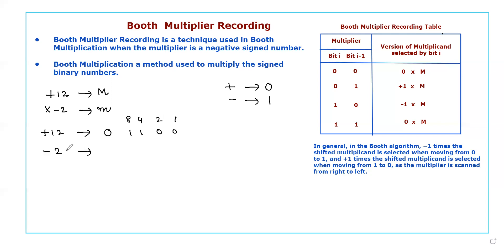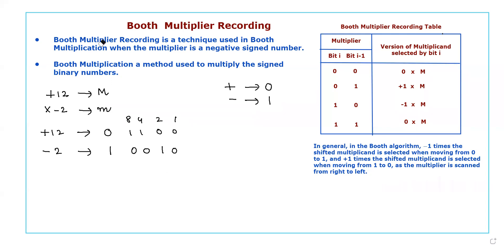Similarly, for -2: the minus sign means the sign bit value is 1. To represent 2 in binary, two bits are sufficient, but in Booth multiplication we perform multiplication using two's complement, so both the multiplicand and multiplier must have the same number of bits. That's why we place two more zeros in the left position, making it 0010.